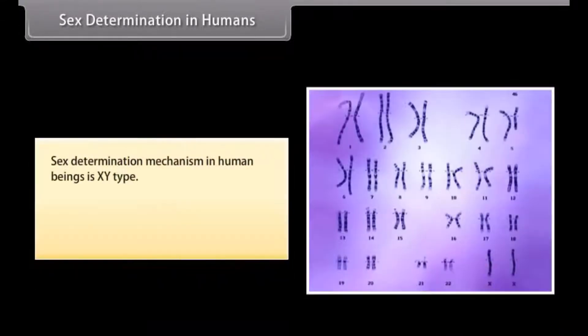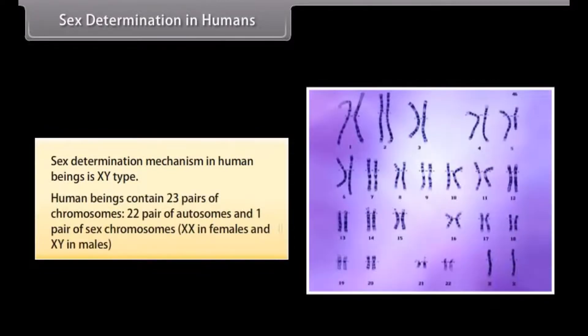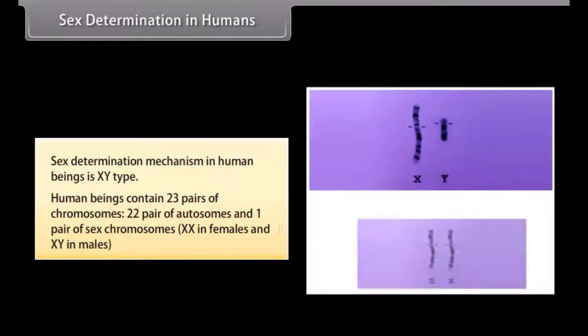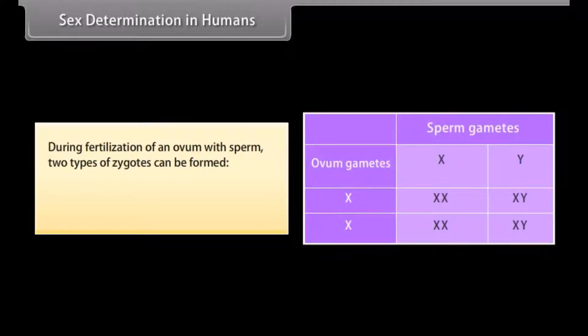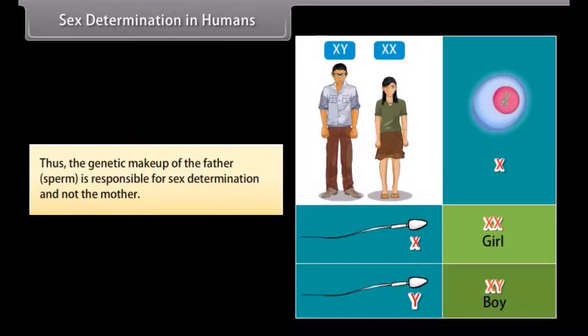Sex determination in human beings is XY type. Human beings contain 23 pairs of chromosomes: 22 pairs of autosomes and one pair of sex chromosomes — XX in females and XY in males. During fertilization, two types of zygotes can be formed, resulting in 50% chance of a male (XY) or female (XX) child. Thus, the genetic makeup of the father's sperm is responsible for sex determination, not the mother.